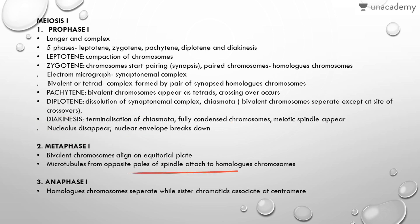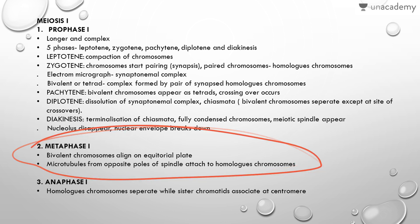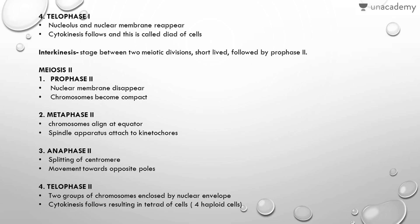In metaphase I, bivalent chromosomes appear at the equatorial plate, similar to metaphase in mitosis, and spindle apparatus are seen. In anaphase I, homologous chromosomes separate but sister chromatids remain associated at the centromere. In telophase I, the nucleolus and nuclear membrane reappear, and cytokinesis follows. At the end of meiosis I, two daughter cells are formed.